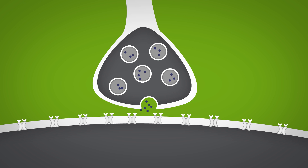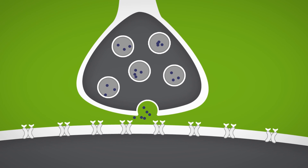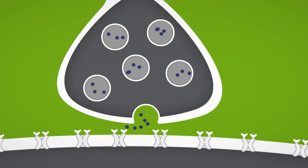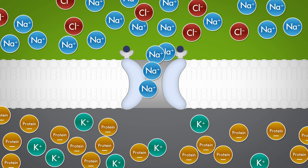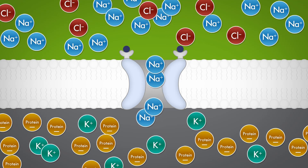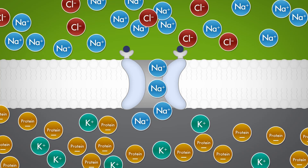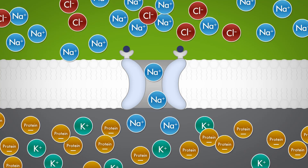The effect of the chemical signal depends largely on the type of receptor to which it binds. Ionotropic receptors are located in the cell membrane and have a pore that allows ions to pass through.